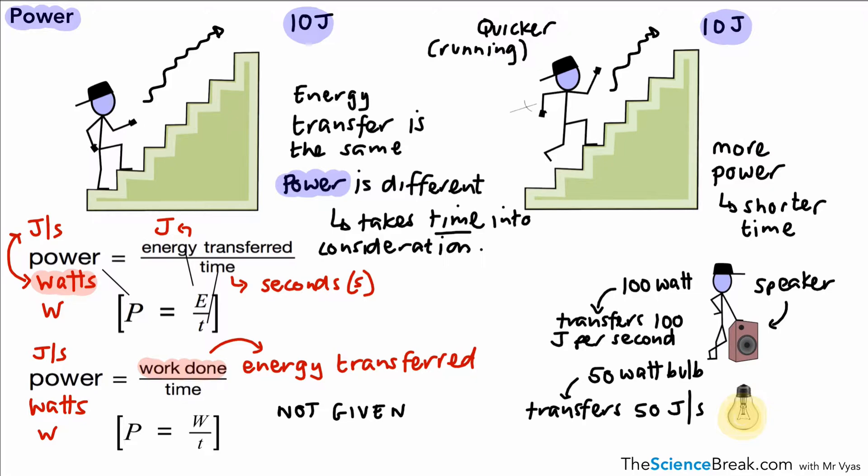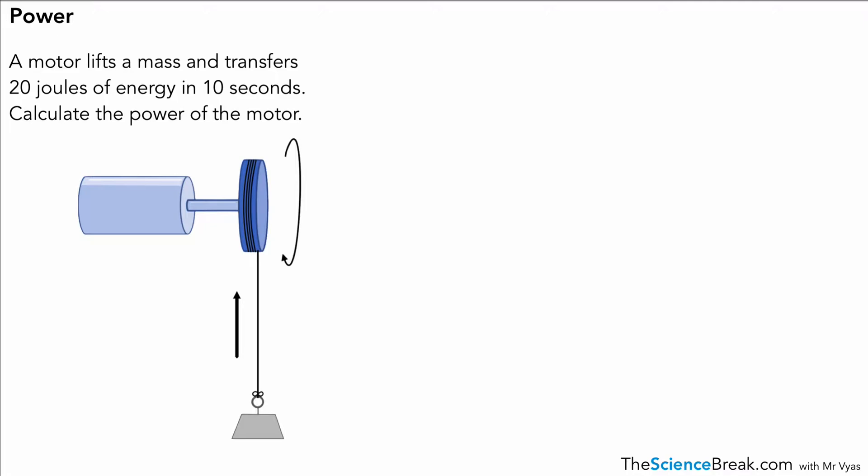What we should do now is have a go at applying and practicing the use of our equations. I've got two examples, one quite straightforward and one slightly trickier. This is the slightly easier one. A motor lifts a mass and transfers 20 joules of energy in 10 seconds. Calculate the power. Our equation is energy transferred divided by time, so we just put in the numbers: 20 divided by 10, that gives a power of 2 watts.